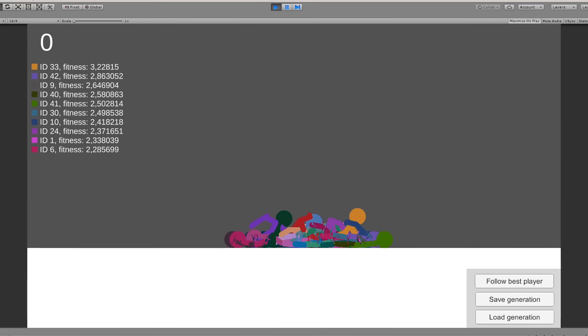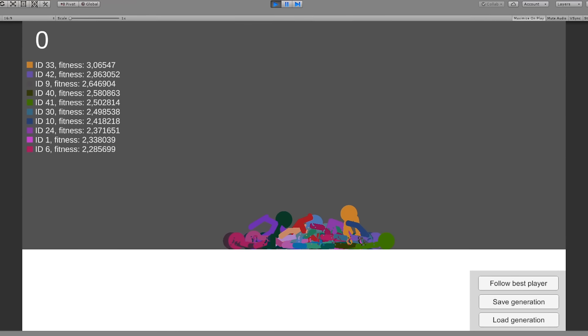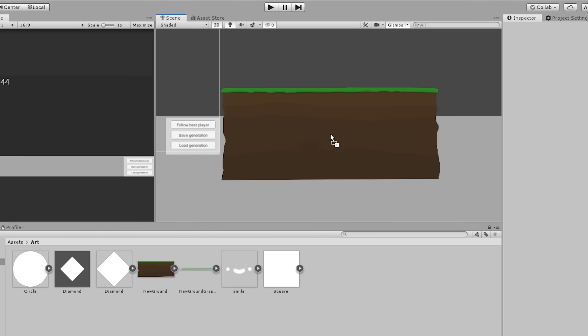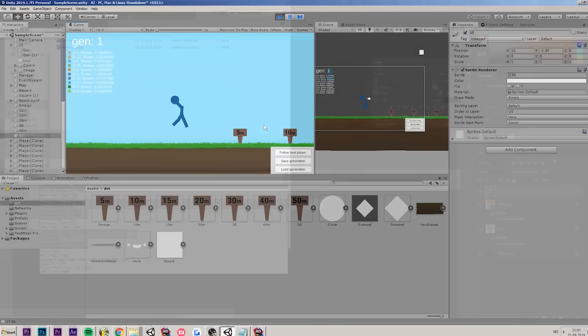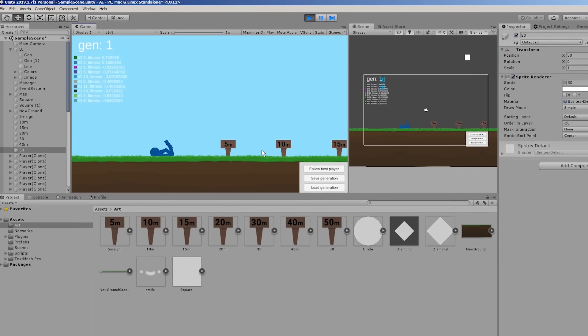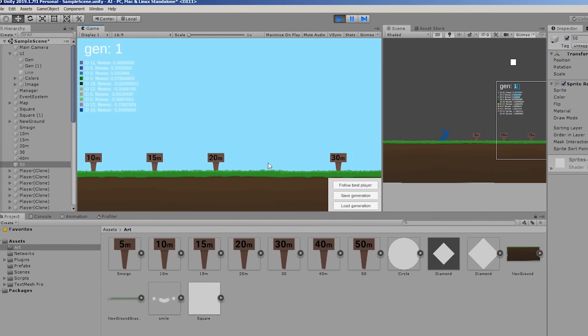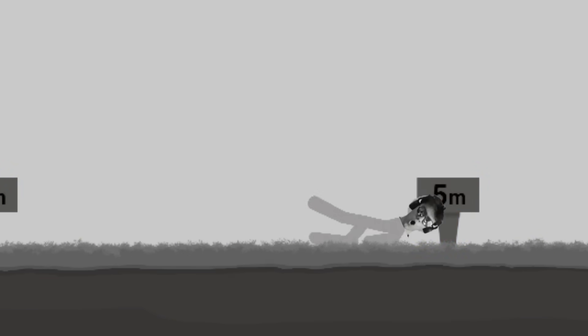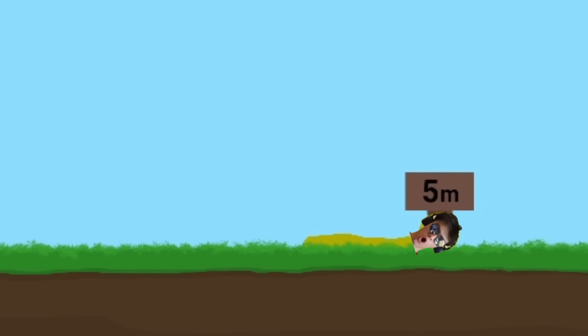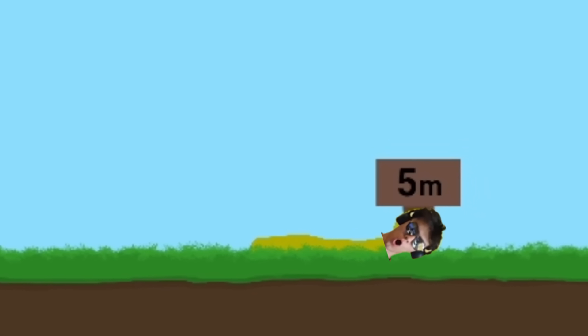But before we go any further, let's spice up the graphics a bit because it looks kind of stale at the moment. So first I added some ground and grass, because ground and grass is pretty tight. Then I made a little sign and placed it into the world, and my goal is to make Billy run 50 meters within 15 seconds without falling over, and even I can't do that in real life, so it would be pretty impressive if Billy could. So is it even possible? Well, there's only one way to find out.